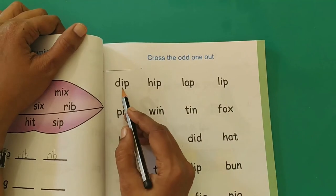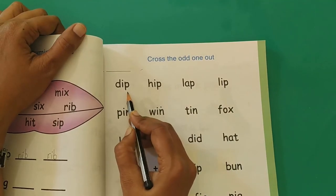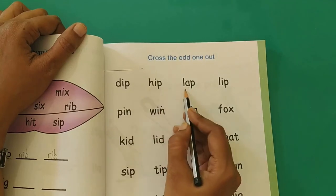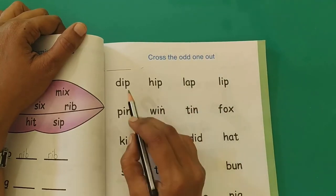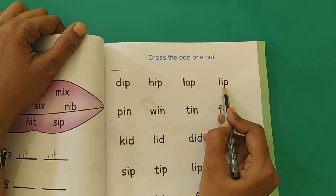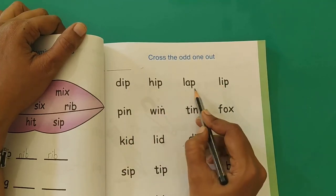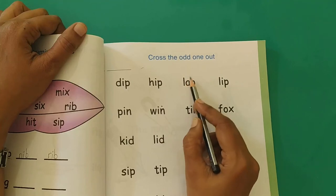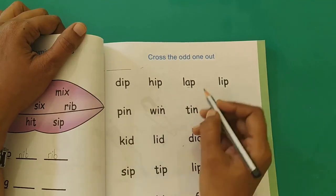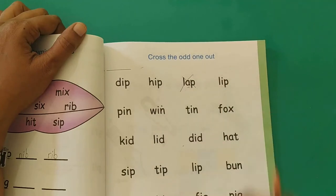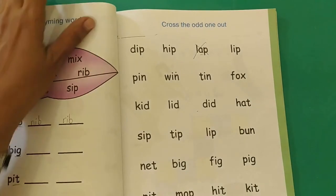Let's read the words. DIP, HIP, LAP, LIP. See, these three words have the vowel I. This word here, LAP, has the vowel A. So this is the odd one out. So I will cross out this word.